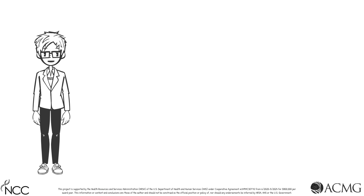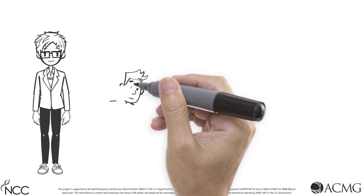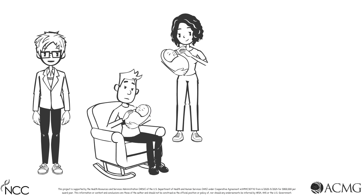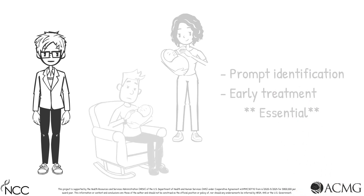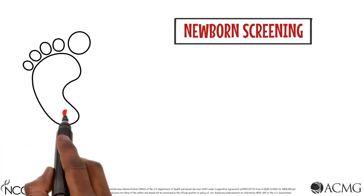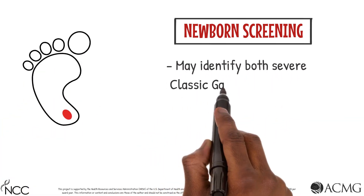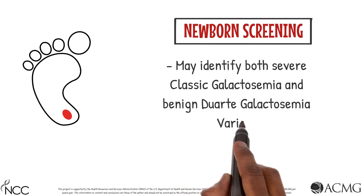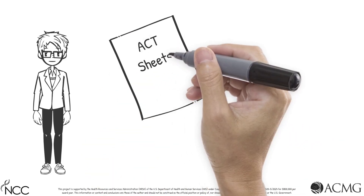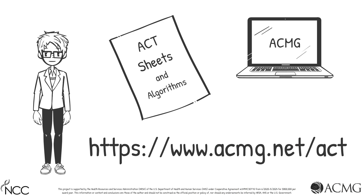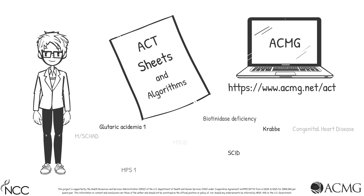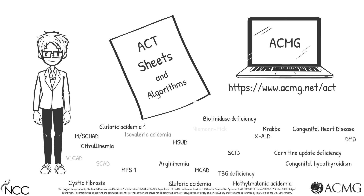Before we end today's session, let's have a quick review. First, Classic Galactosemia is a serious condition, and identification of affected individuals is essential for administration of life-saving early treatment. Second, newborn screening may identify both severe Classic Galactosemia and the benign Duarte galactosemia variant. Third, ACT Sheets are freely available on the ACMG website to review in the event of a screen-positive result, and are available for many other conditions that can be identified through newborn screening.